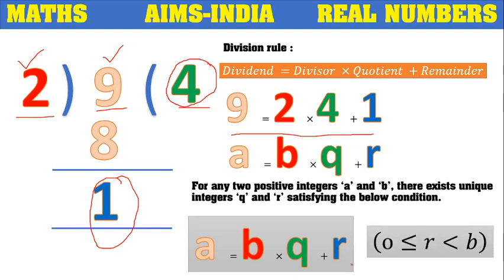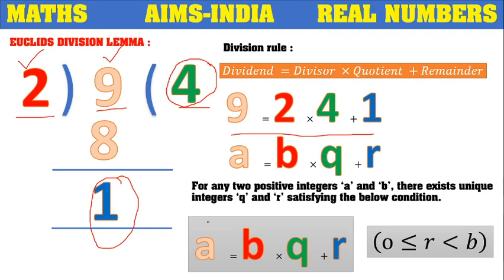One important thing to keep in mind: whatever remainder we get is always less than the divisor. Here we can observe 1 is less than 2. According to Euclid's Division Lemma, for any two positive integers a and b, there exist unique integers q and r satisfying the division rule, with the condition that 0 ≤ r < b. This means the remainder always lies between 0 and the divisor, strictly less than the divisor.